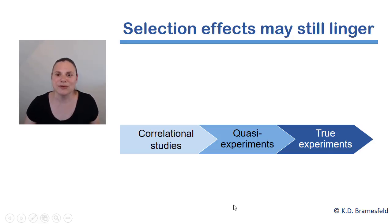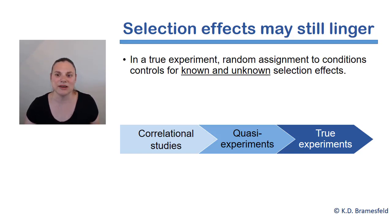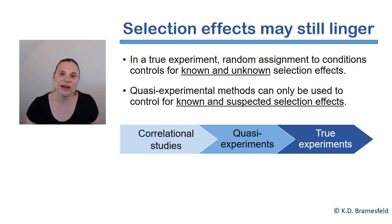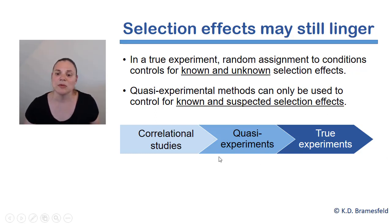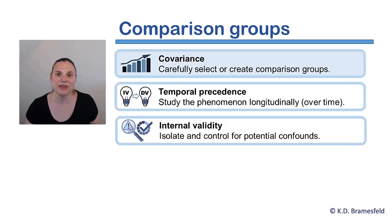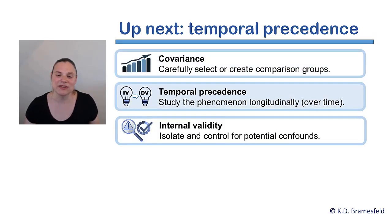With that said, even when matching, equating, and waitlist groups are employed, selection effects may still linger. This is because in a true experiment, random assignment to conditions is able to control for both known and unknown selection effects. In contrast, in a quasi-experimental method, researchers are only able to control for the factors that are known or suspected and can be explicitly designed for. So true experiments are still always going to be better than quasi-experiments, but quasi-experiments certainly have some internal validity advantages over correlational studies. Now we're going to move on to our second condition of causality, which is examining temporal precedence.